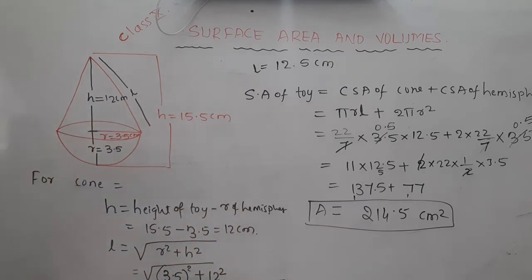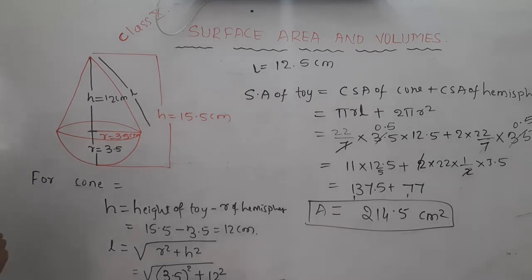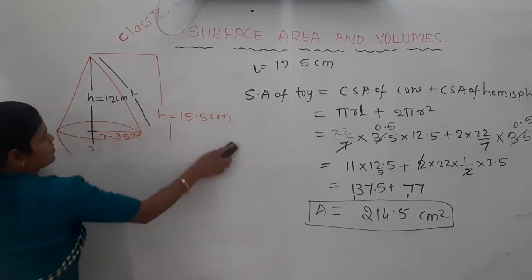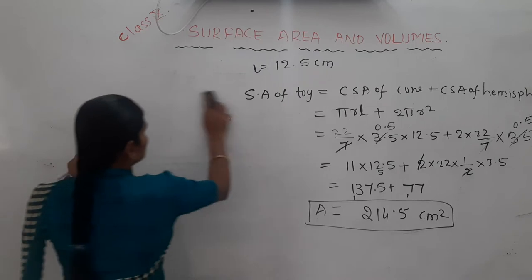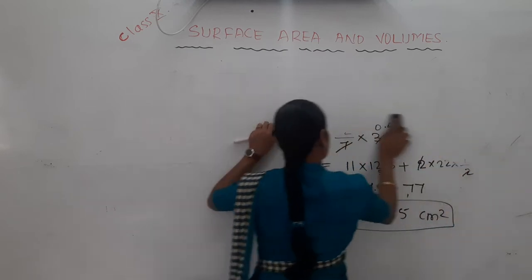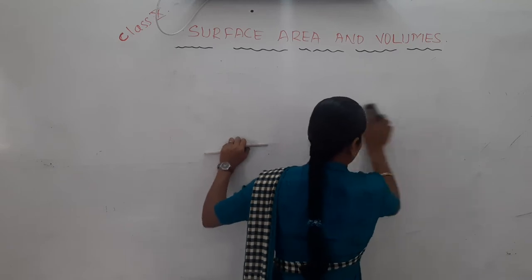So 240.5 cm² is the required surface area of this toy. Now we move to the fourth question — a combination of a cube and a hemisphere.